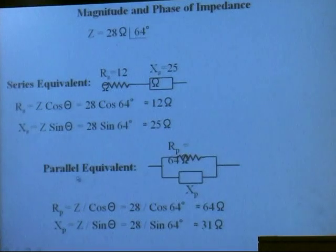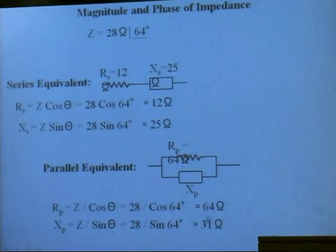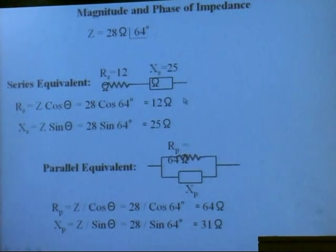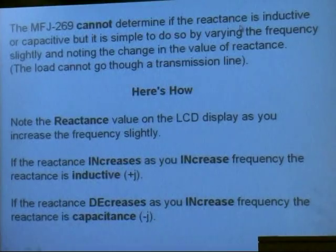You can also calculate the parallel equivalent too. That's given by the magnitude of impedance divided by the cosine of theta. In this case, the parallel equivalent resistance is 64 ohms and the parallel equivalent reactance is 31 ohms. I'm going to tell you some use for this. I know it doesn't sound like it's any use right now, but there is some use for it.